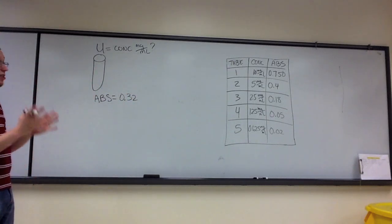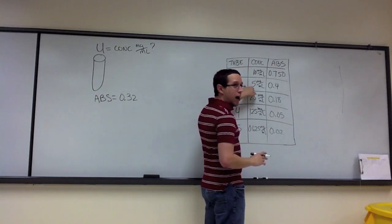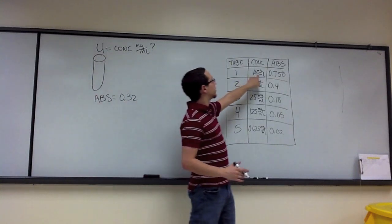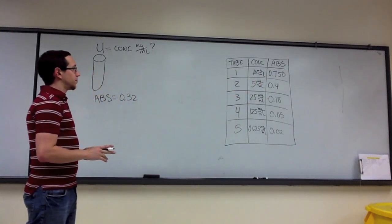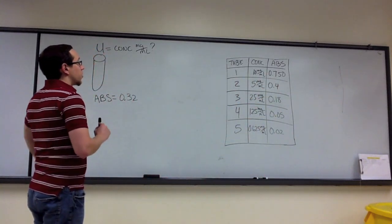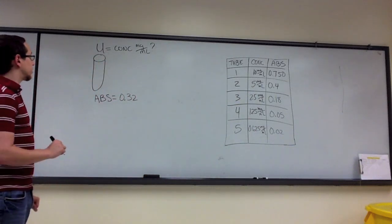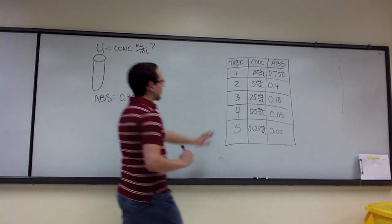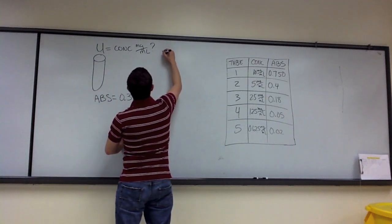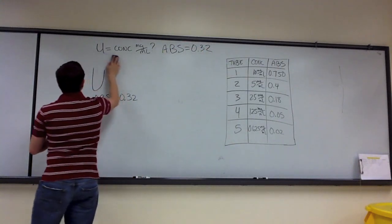Initially you could say 0.32 is somewhere between these two values — so it's somewhere between 2.5 and 5 milligrams per milliliter — which is definitely closer to an idea of where this concentration falls than when we only had a single test tube. But let's not jump the gun. Let's instead use this information to give us a better approximation by constructing a standard curve, and use that standard curve to estimate the concentration of the unknown based on its absorbance.